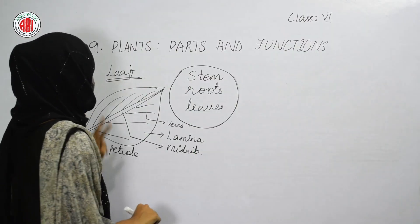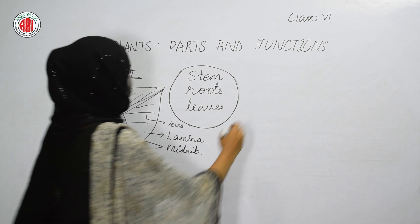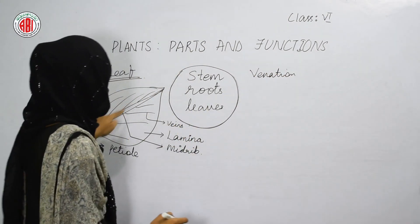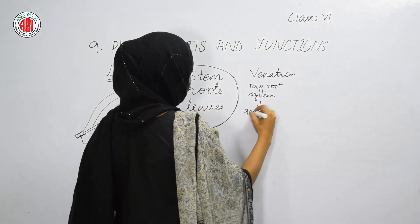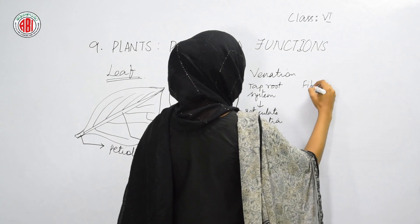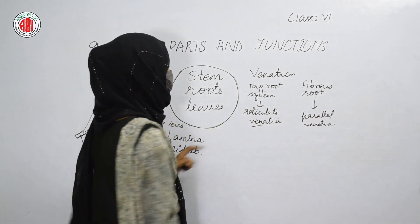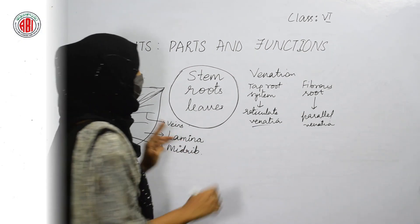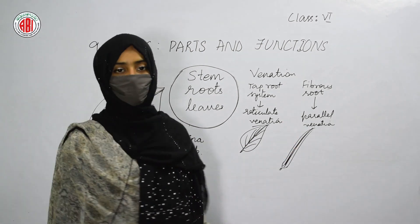When you see different plants, you can find the arrangement of veins in different manners. Venation is the arrangement of veins on the leaf surface. Plants that show the tap root system show reticulate venation, and plants with fibrous root system show parallel venation. If the veins are arranged in a web-like manner, it is called reticulate venation; if the veins are arranged parallelly, it is called parallel venation.